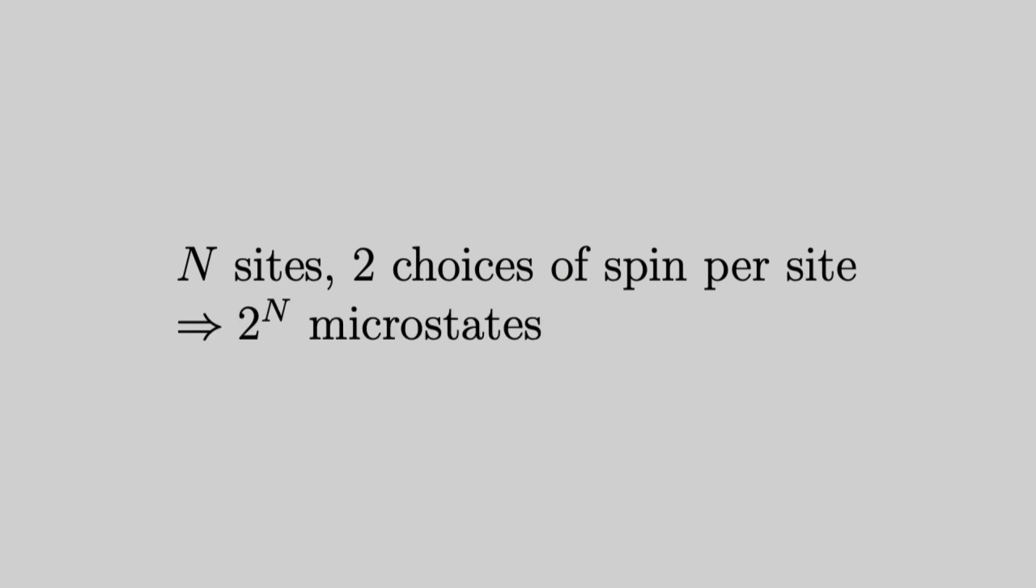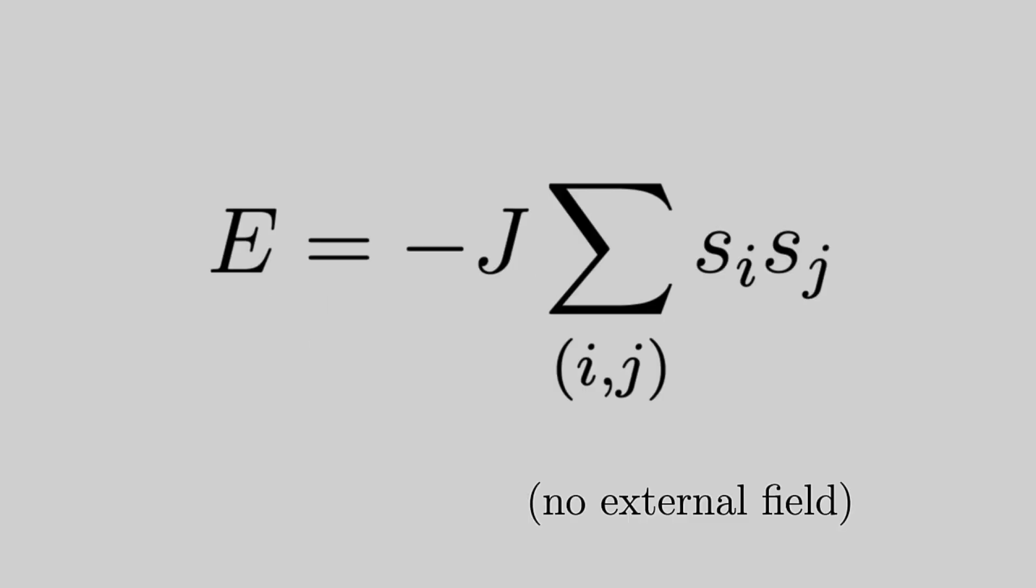For this section of the video, it is highly recommended that the viewer already has some experience with Hamiltonians and partition functions. Each microstate of our 2D Ising model is characterized by a set of spins, which can be either plus or minus one. We have that there are two to the n possible microstates. We saw before the energy of the system is related to the coupling constant J.